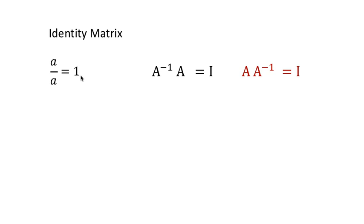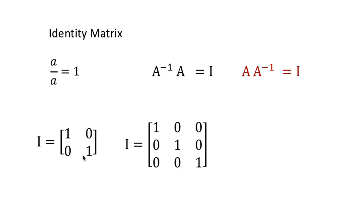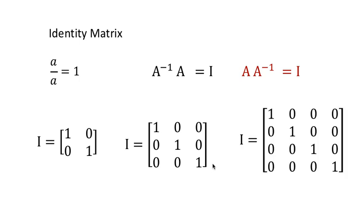What does it look like when it's a matrix? If you've got a 2 by 2, it's 1, 0, 0, 1. A 3 by 3 is 1, 0, 0, 0, 1, 0, 0, 0, 1. And 4 by 4, etc. In general terms, the leading diagonal is 1s, and everything else is 0s.